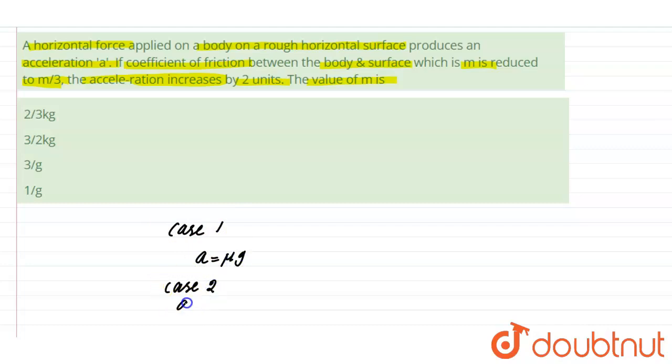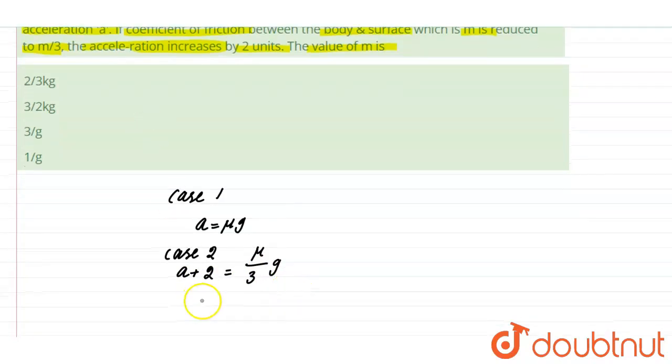a plus 2 equal to mu by 3 g. Dividing both we get a by a plus 2 equal to 3, therefore a equal